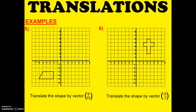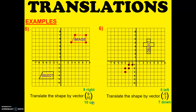Fifth example. Translate the shape by vector 9, 10 — which means 9 right, 10 up. And that's our image. For the sixth example, translate the shape by vector negative 5, negative 7 — which means 5 left, 7 down. And that will be our image.